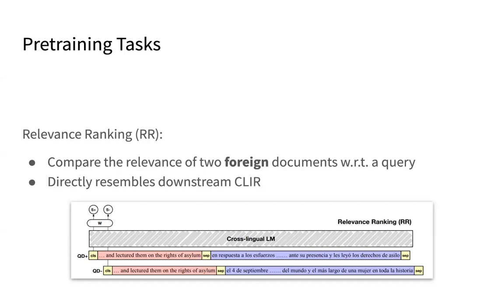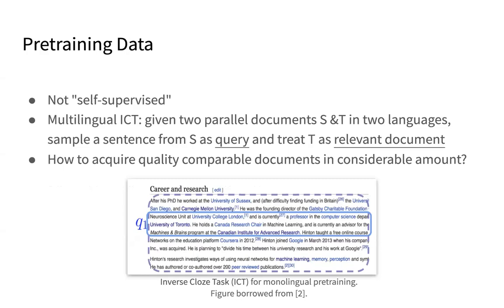The second pre-training task is called relevance ranking. Basically, we want to compare the relevance of two foreign documents with respect to a query. The query is in the source language and two documents are in the target language, where one of the foreign documents is relevant to the query and the other is not. This relevance ranking task directly resembles the downstream CLIR task, with the only difference being that it is trained with pre-training data instead of real query-document data.